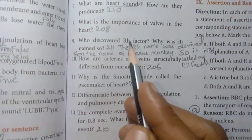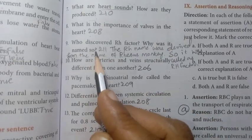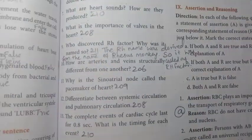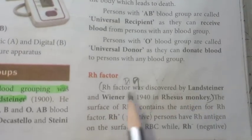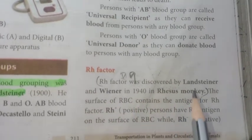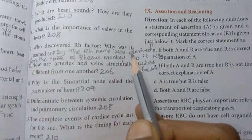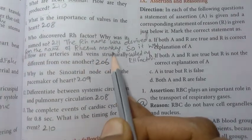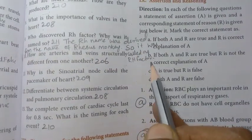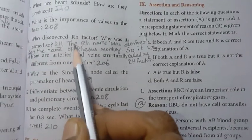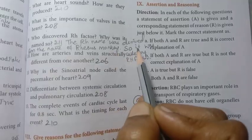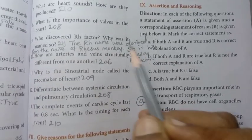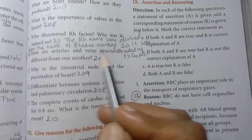Question 9: who discovered the RH factor? Why was it named so? Page number 211. RH factor was discovered by Landsteiner and Wiener in 1940 in Rhesus monkey. Write that as the first point. Second point: the RH name was derived from the name of Rhesus monkey, so it was called RH factor. That answers both who discovered it and why it was named so.